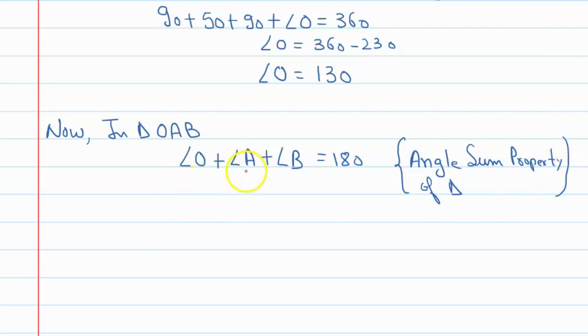Moreover, this A and B will be equal. The reason is that angle A is equal to angle B because these are the angles opposite to equal sides, and equal sides here are radius. Yes.